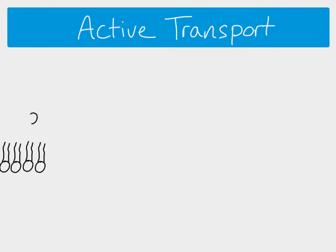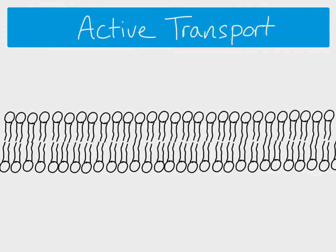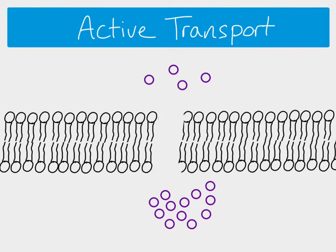Active transport takes place across cell membranes, which are made of phospholipid bilayers as you can see here. Active transport moves substances from areas of lower concentration to areas of higher concentration.